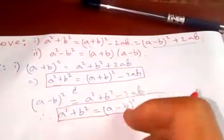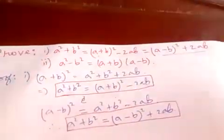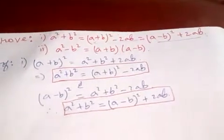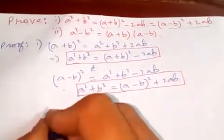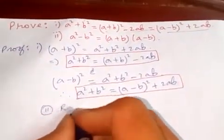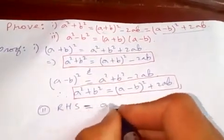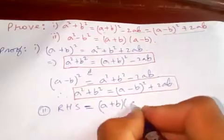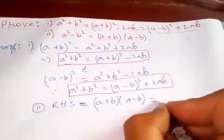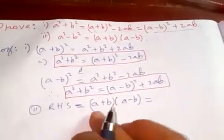Now let's proof formula number two. Let's start from the right hand side, you will be shorter. So (a+b)(a-b), if you do just simple multiplication, a into a is a².